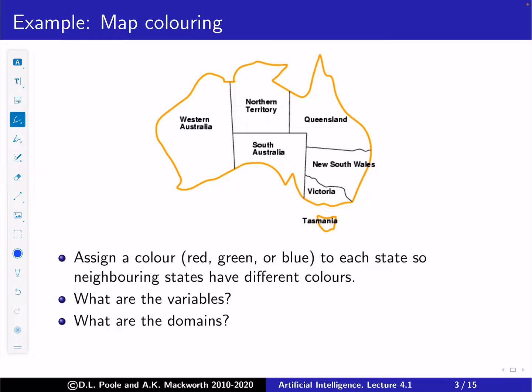Here's an example of a map coloring problem. We're going to assign a color — either red, green, or blue — to each state in Australia so that neighboring states have different colors. The variables here are the states: Western Australia, Northern Territory, South Australia, and so on. Each one has to have a color.